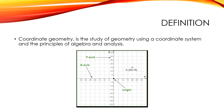In the diagram above, the point A has an x value of 20 and a y value of 15. These are the coordinates of the point A, sometimes referred to as its rectangular coordinates.